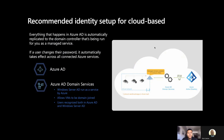One of the recommended examples is for a cloud-based setup. Everything that happens in Azure Active Directory is automatically replicated to the domain controller in a cloud-based model. For users to join their identities, they can load them into Azure Active Directory Domain Services with Windows Server Active Directory running in Azure. This allows virtual machines to be domain joined within Azure Active Directory, and we do this as a service, though there are other options as well.